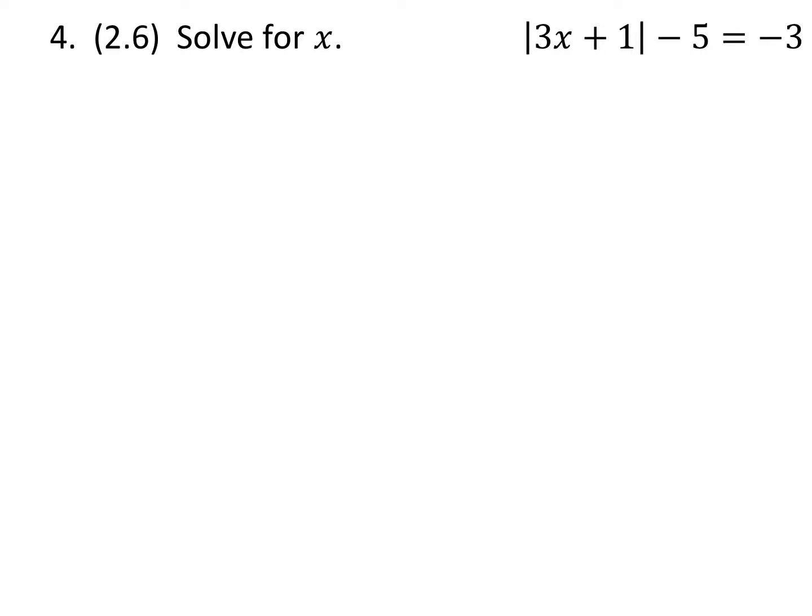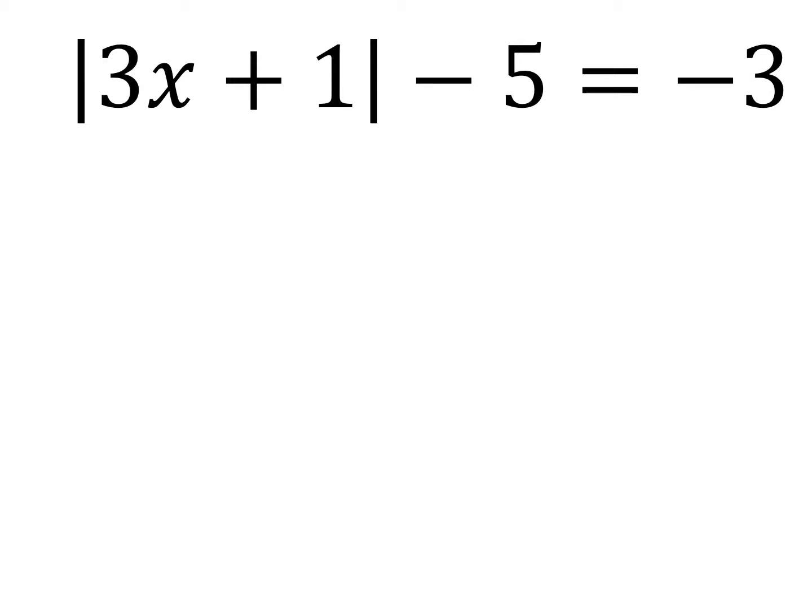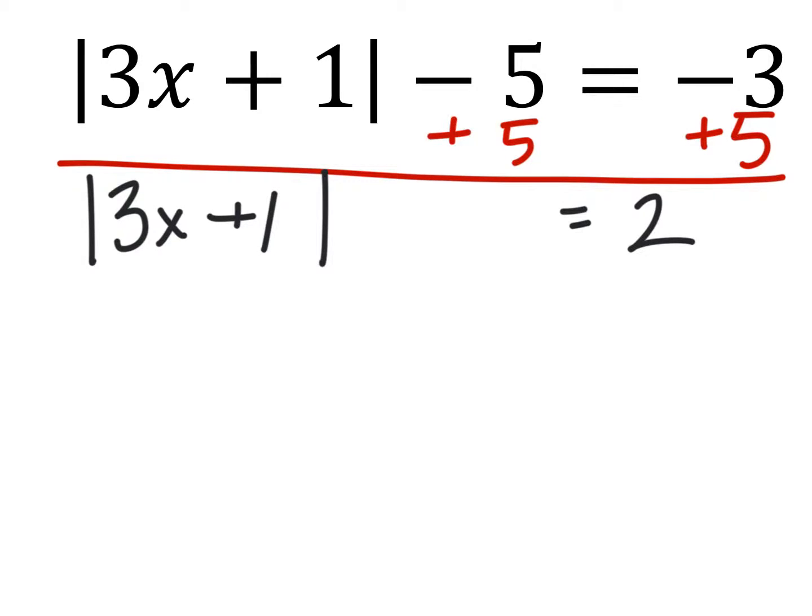Alright, let's take a look. We're just going to solve for x. So the first thing we're going to have to do in this problem is to isolate the absolute value there. So we're going to have to add 5 to both sides of the equal sign and that gives us the absolute value of 3x plus 1 equals 2.